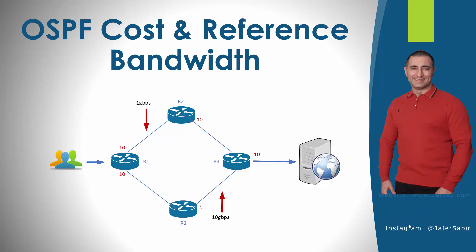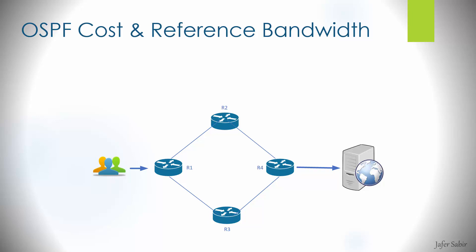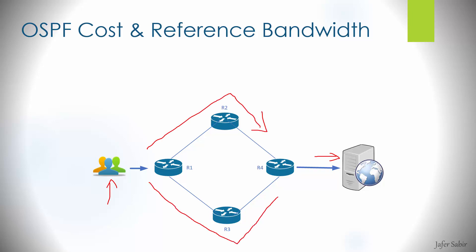OSPF always takes the rule of least path cost within an OSPF area. We've got some clients on the left and they want to get to this server here. So which path would the traffic take? Would it go via the top router, router 2, or the bottom router, router 3? This depends on something called the cost, and the lower the cost from source to destination wins, and the traffic will go over that direction or pathway.